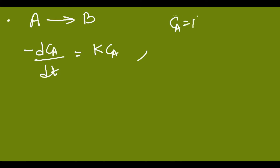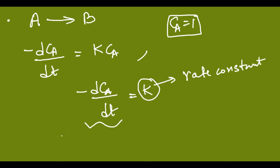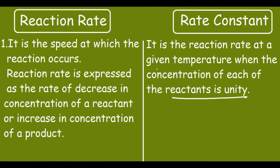If Ca is 1, then −dCa/dt equals k. This indicates that the rate constant is the same as the reaction rate when the reactant concentration is unity. That is what the definition means: it is the reaction rate at a given temperature when the concentration of each reactant is unity.